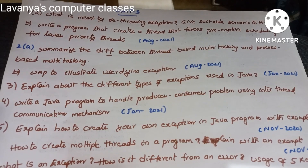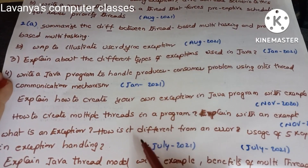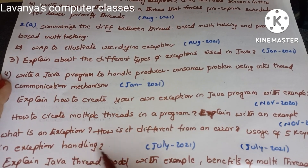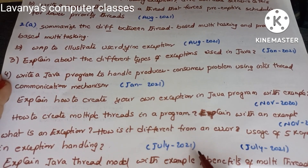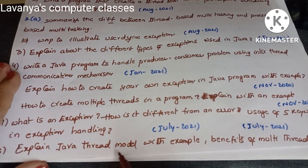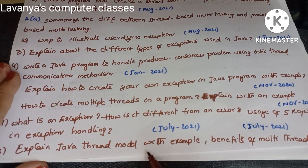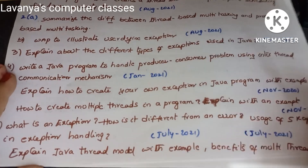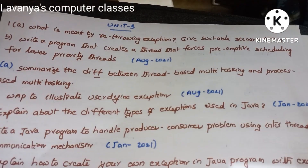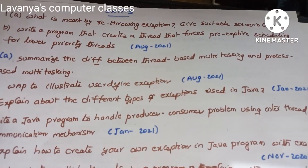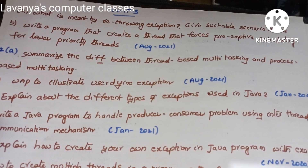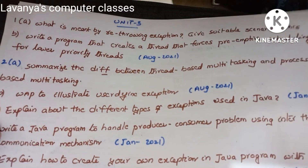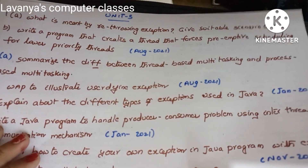'What is an exception? How is it different from an error? Explain the usage of five keywords in exception handling' — July 2021. 'Explain the Java thread model with example and the benefits of multi-threading' — July 2021. The most important concepts in unit three are multi-threading, exceptions, user-defined exceptions, and system exceptions.